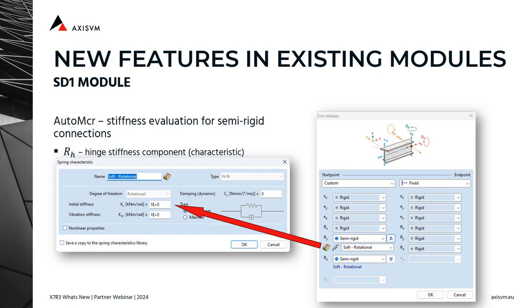During defining these spring characteristics, beside the initial stiffness, the vibration stiffness can also be given. These stiffnesses can be set when defining the line element.